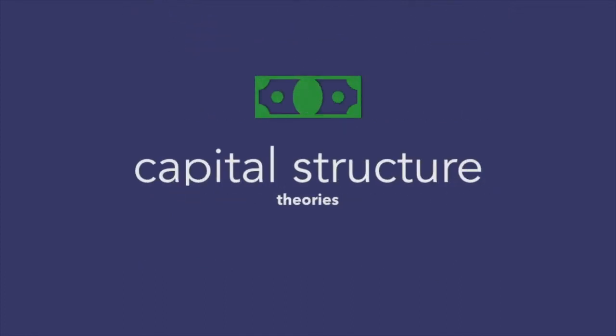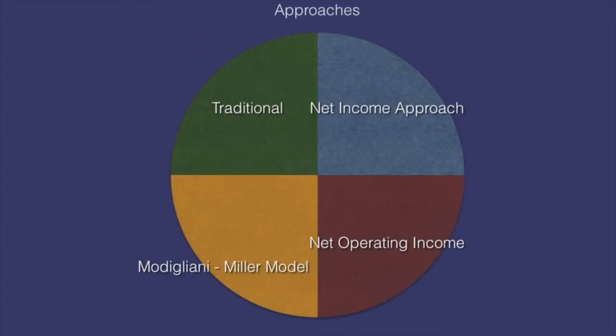Now let us move on to the four theories that are there under the capital structure. These are the traditional approach, the net income approach, the Modigliani-Miller model, and the net operating income method.